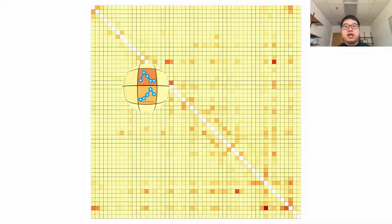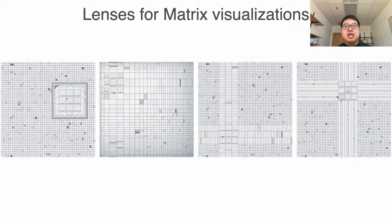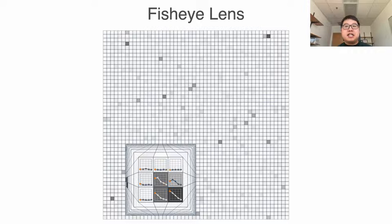We then investigated the literature and identified four representative lenses suitable for matrix visualizations. I will introduce them one by one. Here, we use grayscale colors to ensure our studies were more accessible to a larger population. Our first lens is adapted fisheye lens. It ensures the cells around the focal area are in regular grids and distorts the surrounding cells. The cells in the context area are intact and in their original size.